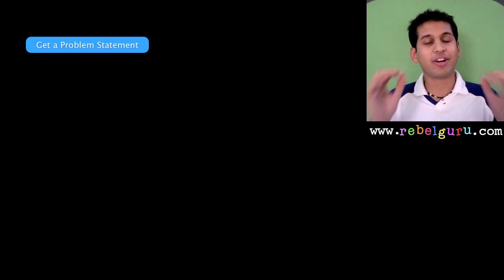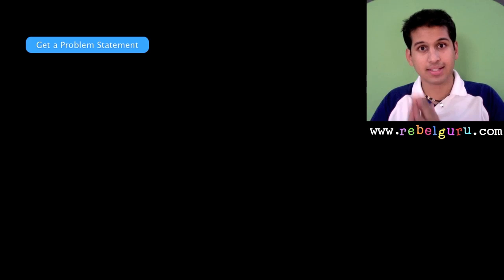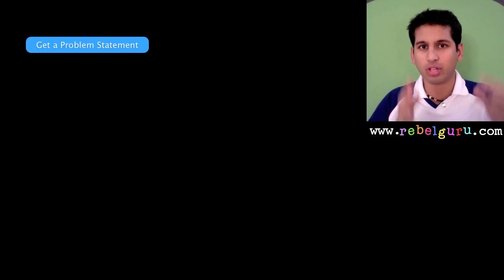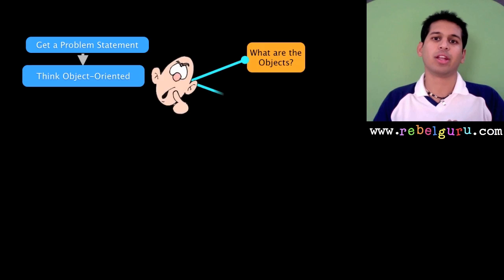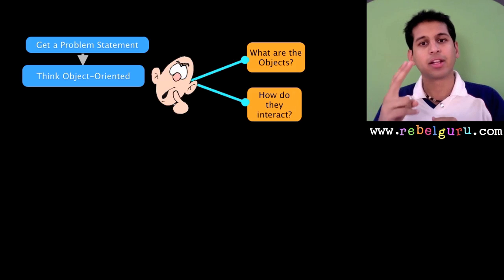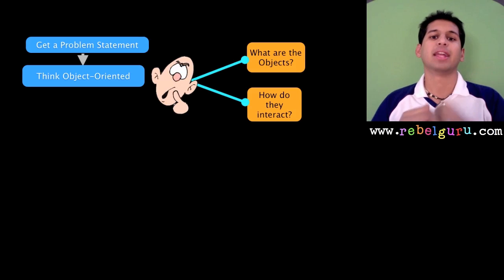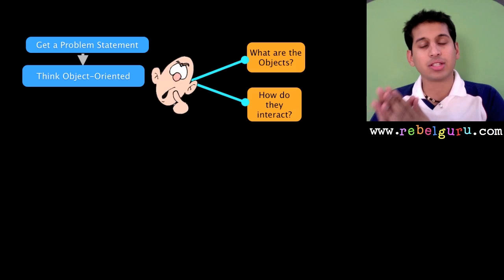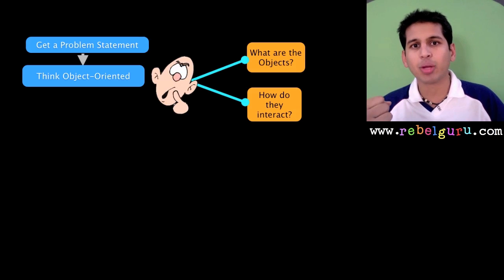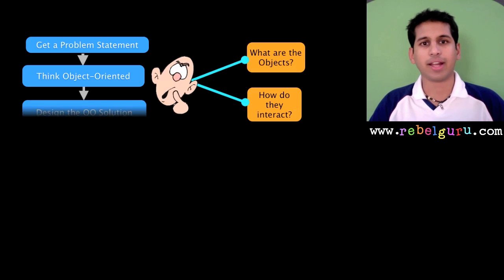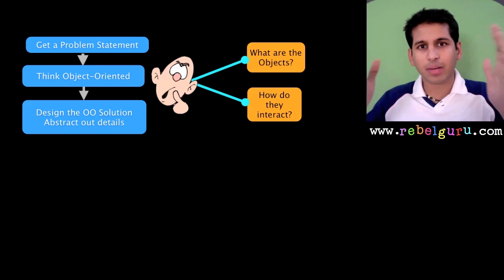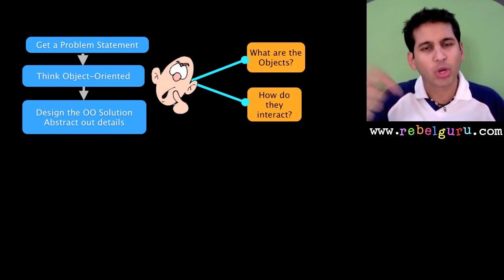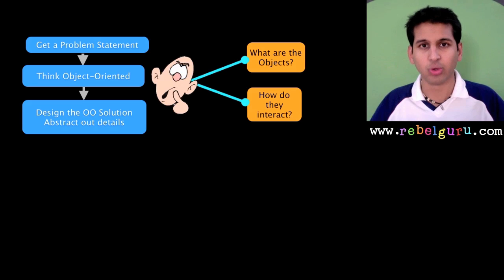The first step in your software engineering exercise is to get a problem statement. Your boss has been kind enough to give you one. What's the next step? Think object-oriented. What does that mean? You ask two fundamental questions: what are the objects and how do they interact? Both questions have to be related to your problem statement. Then you design your object-oriented solution and think at a high level of abstraction. Take a pen and paper, or the back of a napkin, or use some fancy drawing tool and just draw your objects at a really high level without thinking of details.